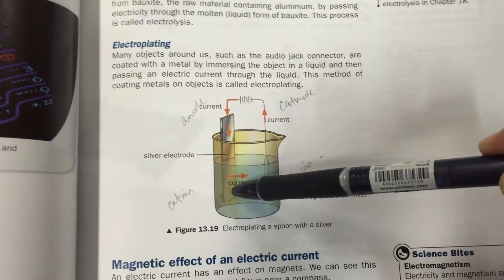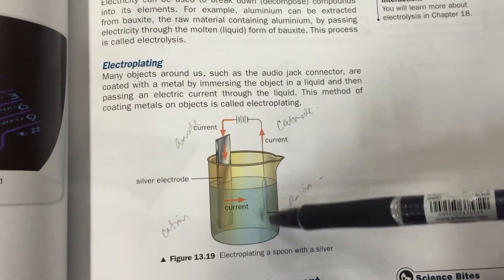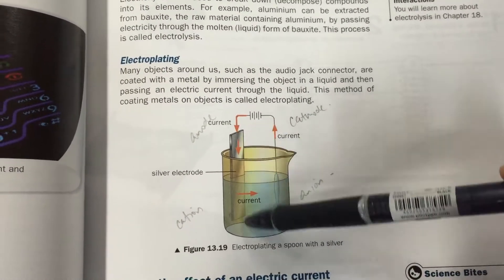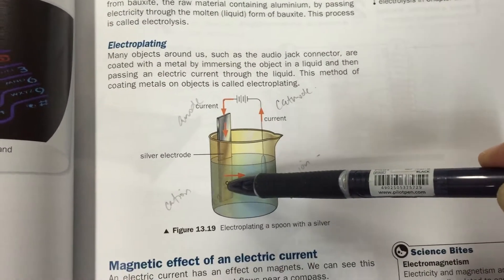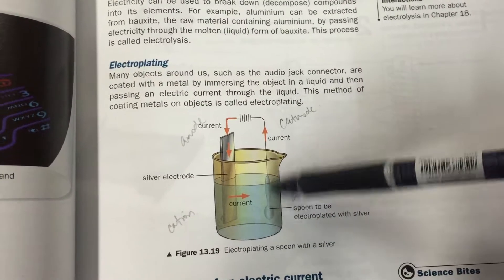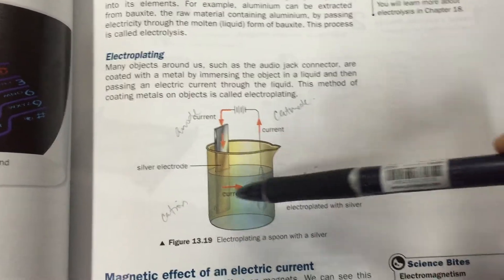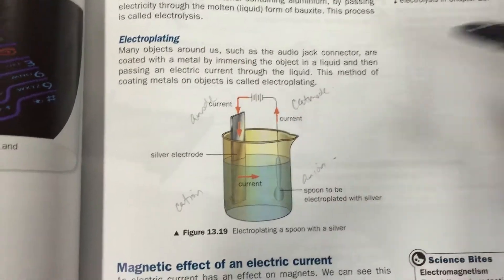So let's say you want to plate copper, plate this spoon, copper or silver. In this case, silver. What happens is you put a silver bar here. Then the silver bar, the ions will actually migrate over to this spoon and then the spoon will be coated later on with a layer of silver. And then this silver bar here will get depleted, will get smaller and smaller.